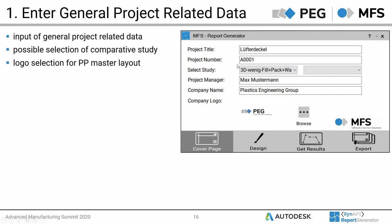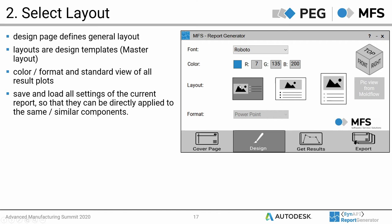The workflow starts with input of general project-related data. On the first page of the Report Generator, you enter the project title, project number, project manager, and company name. These settings are saved automatically so that for the next report only the project title needs to be changed. On the second page, the general layout of the report is defined. You can adjust your part to one standard view and create the report, or load views and layouts from previous reports and apply them to the current project — for example, if the same part was simulated with different process settings or another material.